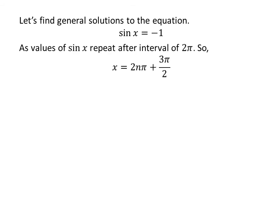Let us find the general solutions for the equation sin(x) = -1. As we know, the values of sin(x) repeat after the interval of 2π. So the general solution is 2nπ + 3π/2, where n is an integer.